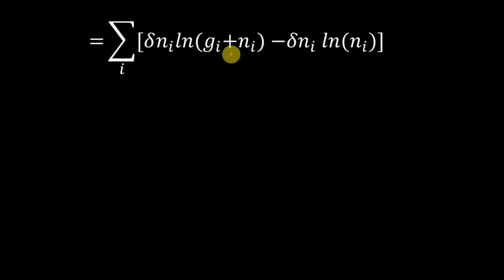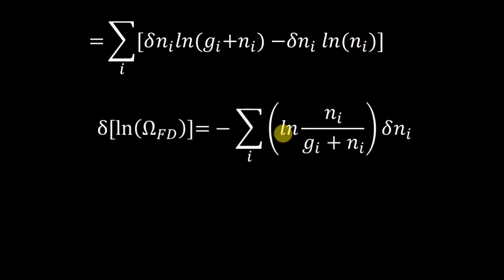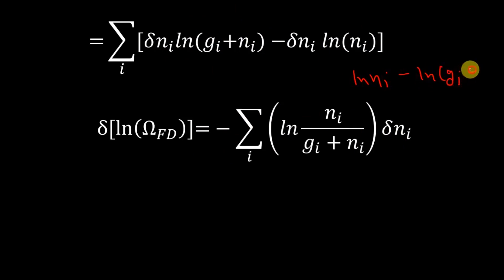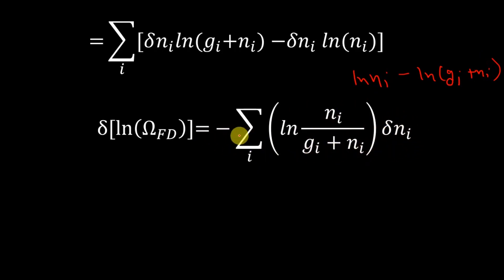So we have this expression. Now we take d(n_i) outside and bring n_i to the numerator. We take minus d(n_i) as the common factor, giving us log(n_i) minus log(g_i + n_i), which is log of n_i upon (g_i + n_i). Outside we have d(n_i) with a minus sign. Now this is not complete — we have other constraints to apply, so we will use the method of Lagrange multipliers.